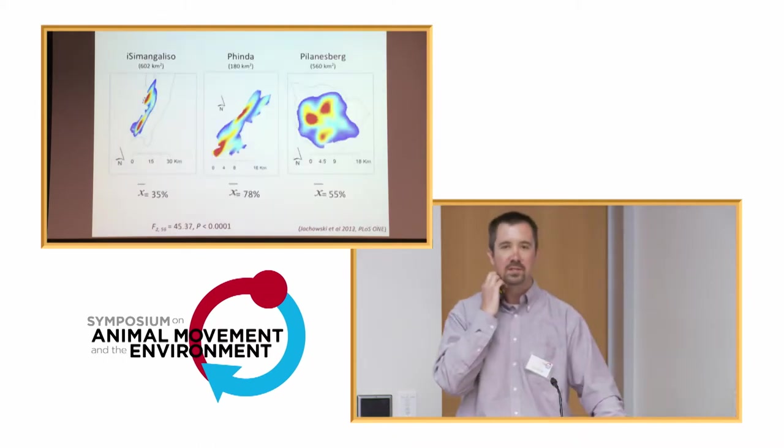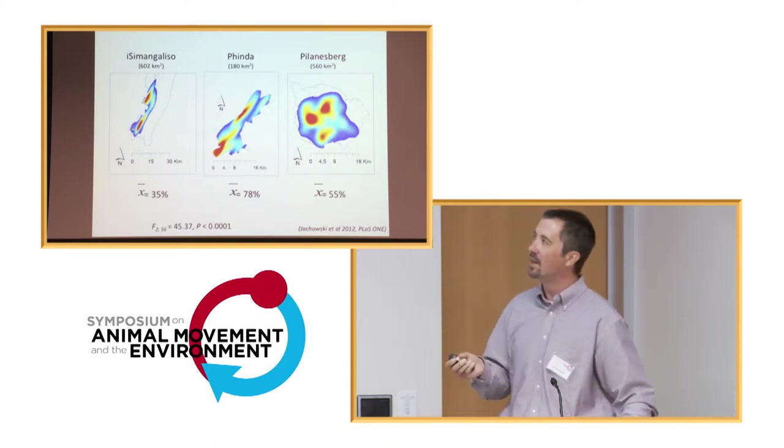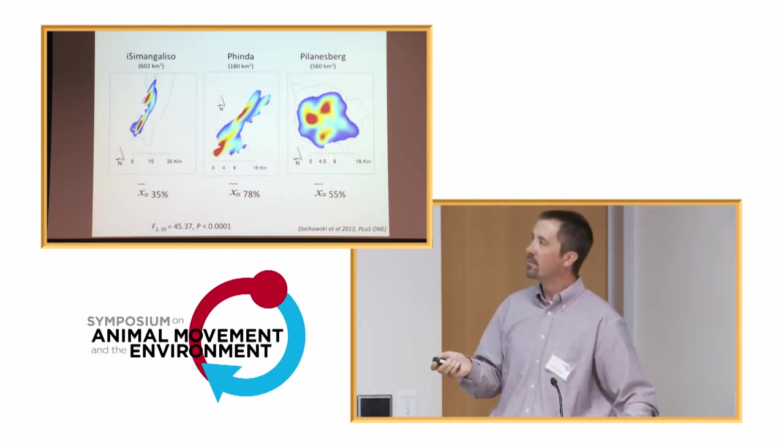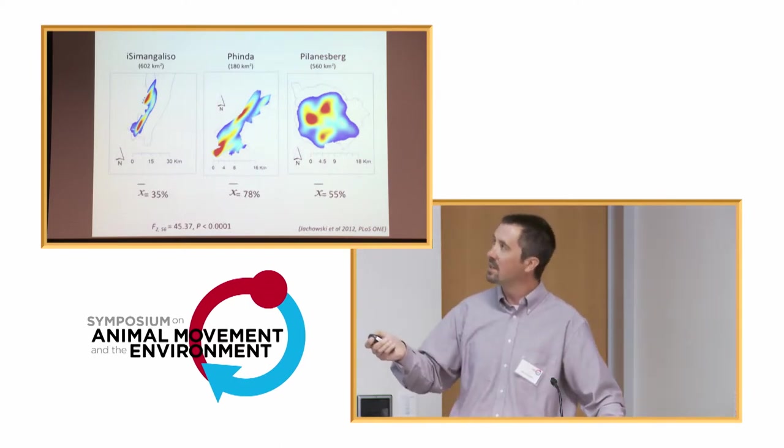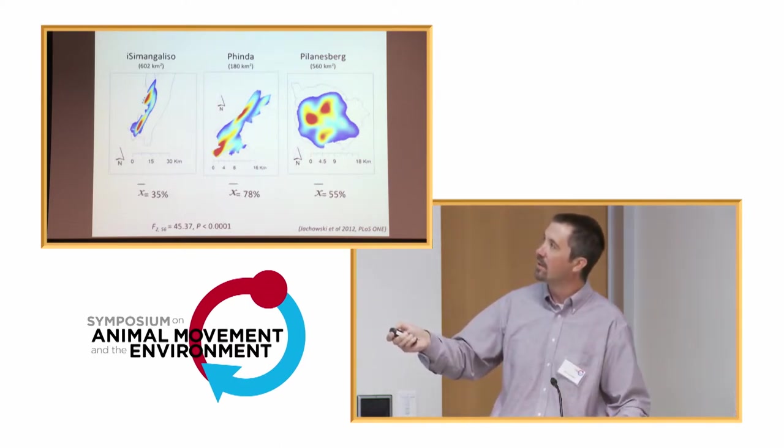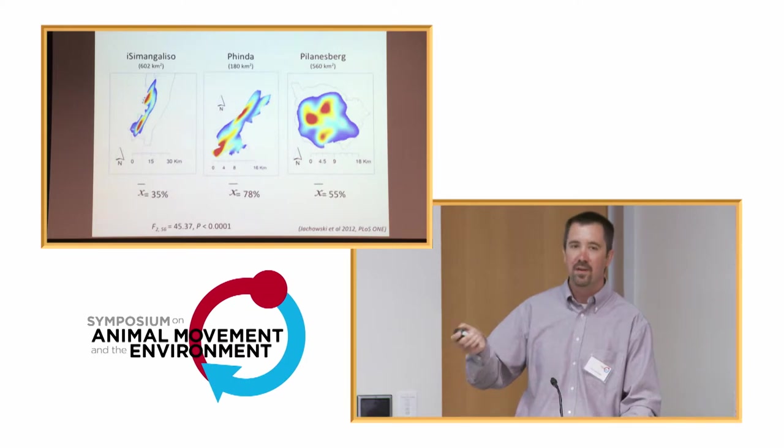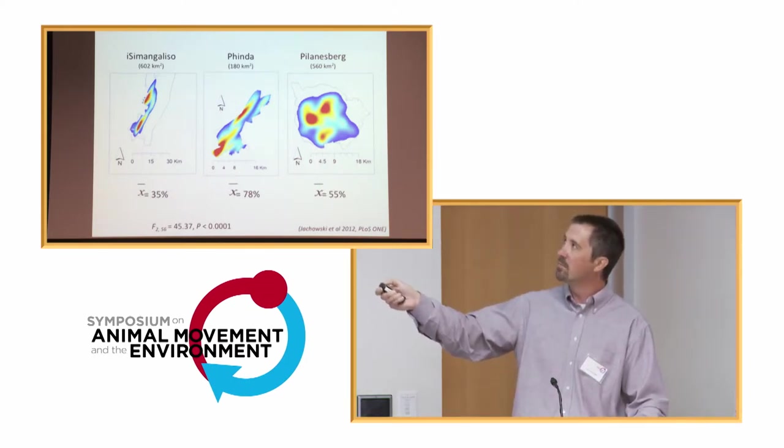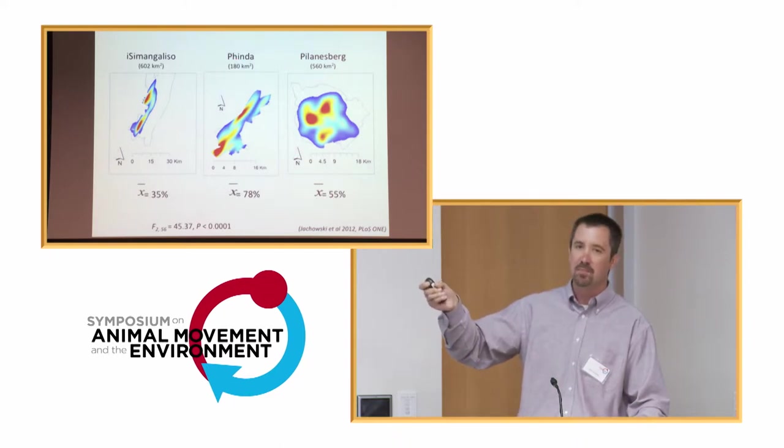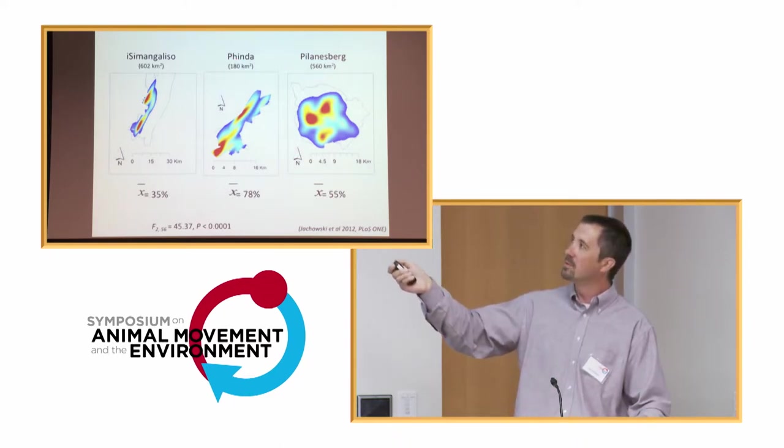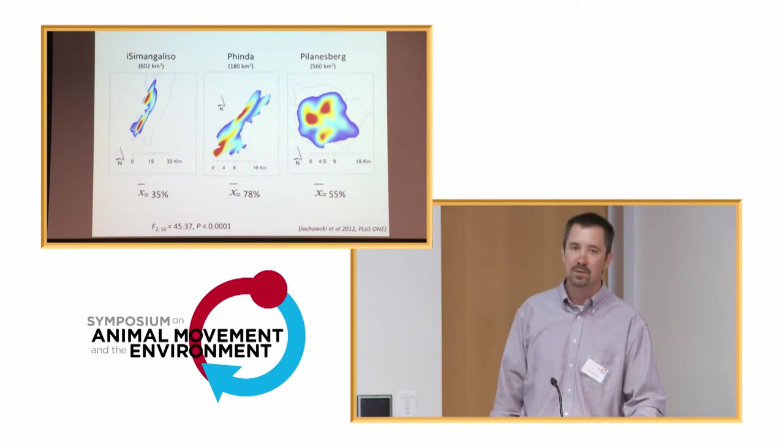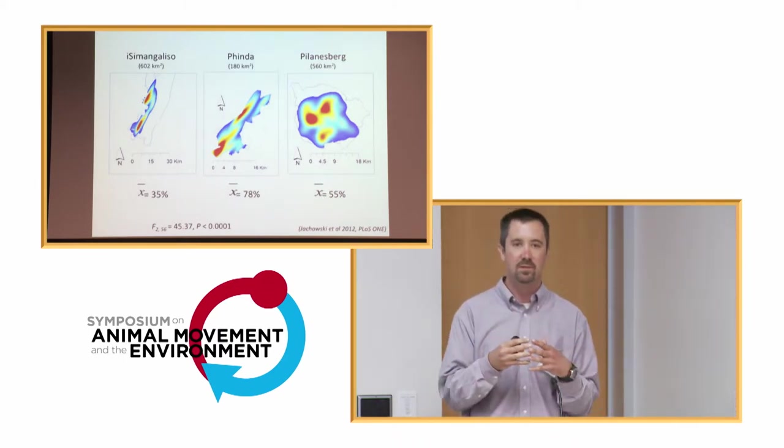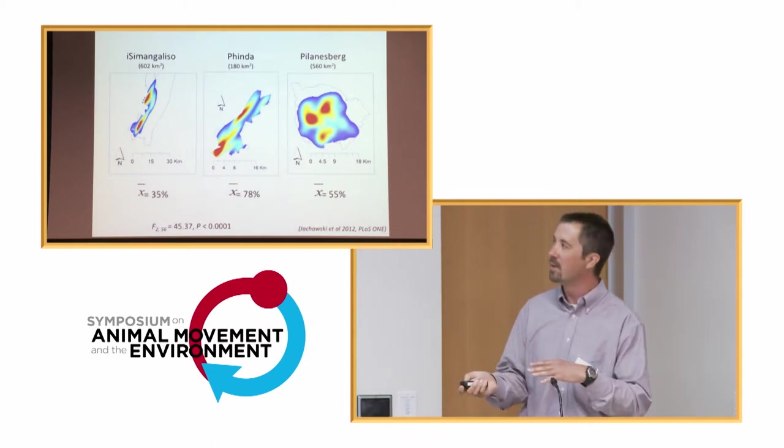I talk about Isimangaliso, the one in red, that's above that 40 nanograms per gram threshold. That's what we think of as kind of this basal threshold, where if an elephant is above that chronically, it's in an elevated physiological state. The ones in blue here, Pinda and Palonsberg, below that threshold. So we think of them as being basal physiological states. And this is over the course of the entire study. So really coarse scale movement ecology and basically spatial ecology. We can look at their utilization distributions. The first thing to notice is that when we looked at the Isimangaliso population here on the far left, they're only using about 35% of the reserve available to them. These other two reserves, the Palonsberg, which is of a similar size, they're using over half of the reserve. So for some reason, they're using less of the reserve that's available to them, and we were concerned about that.